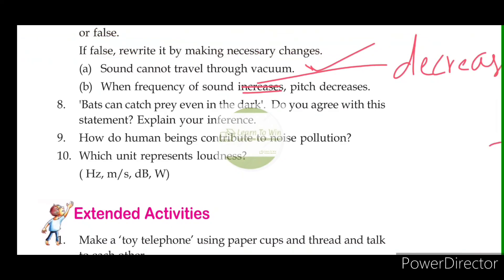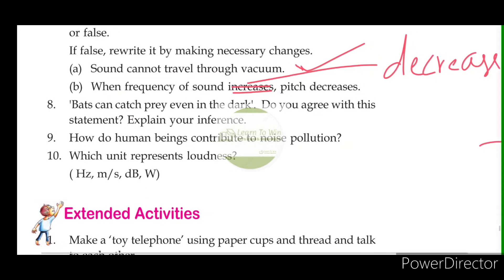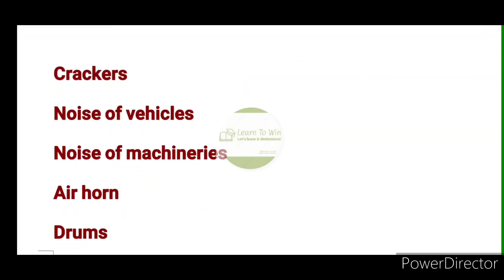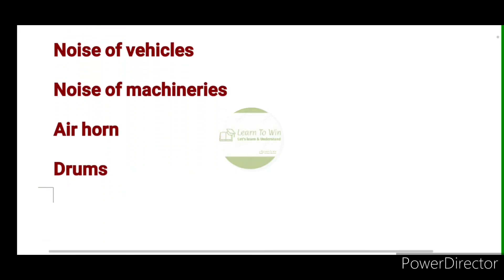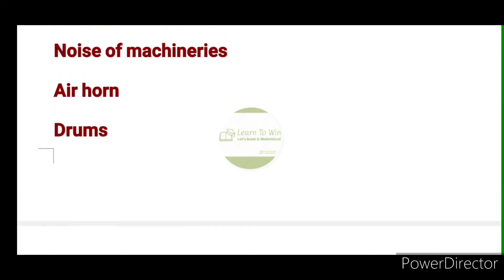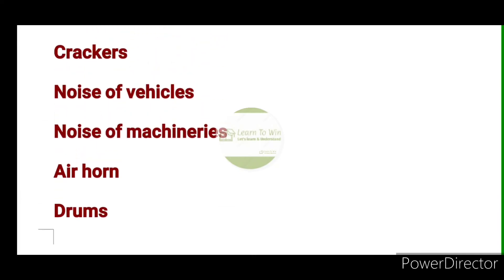How do human beings contribute to noise pollution? Examples include crackers, noise of vehicles, noise of machinery, air horns, and drums. These are examples of noise pollution.